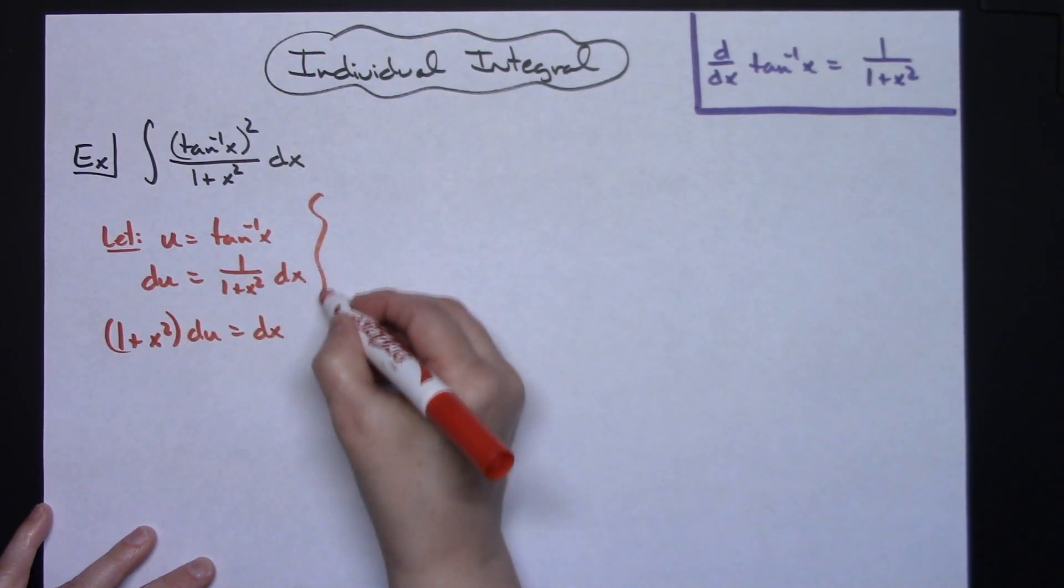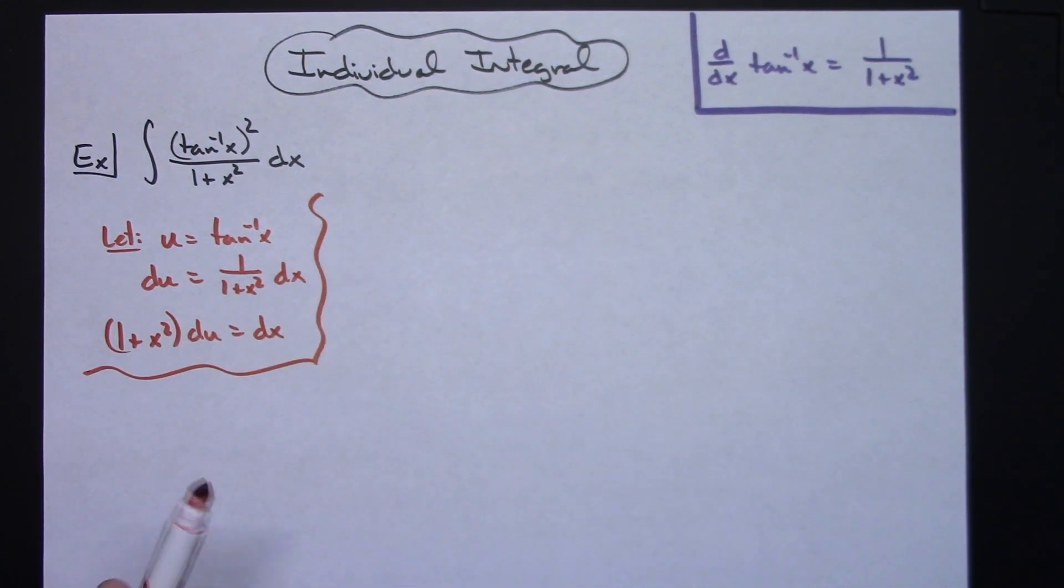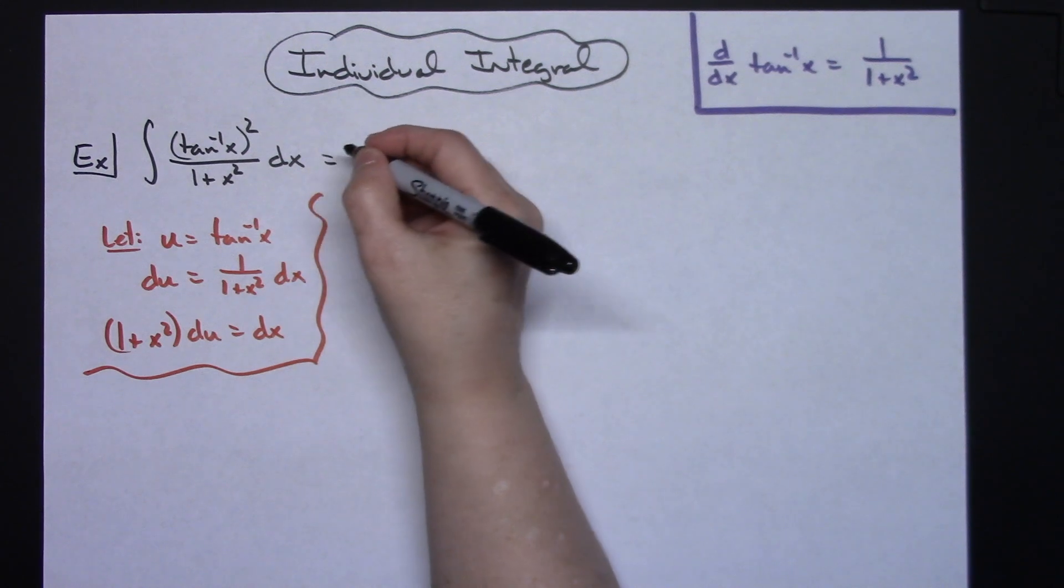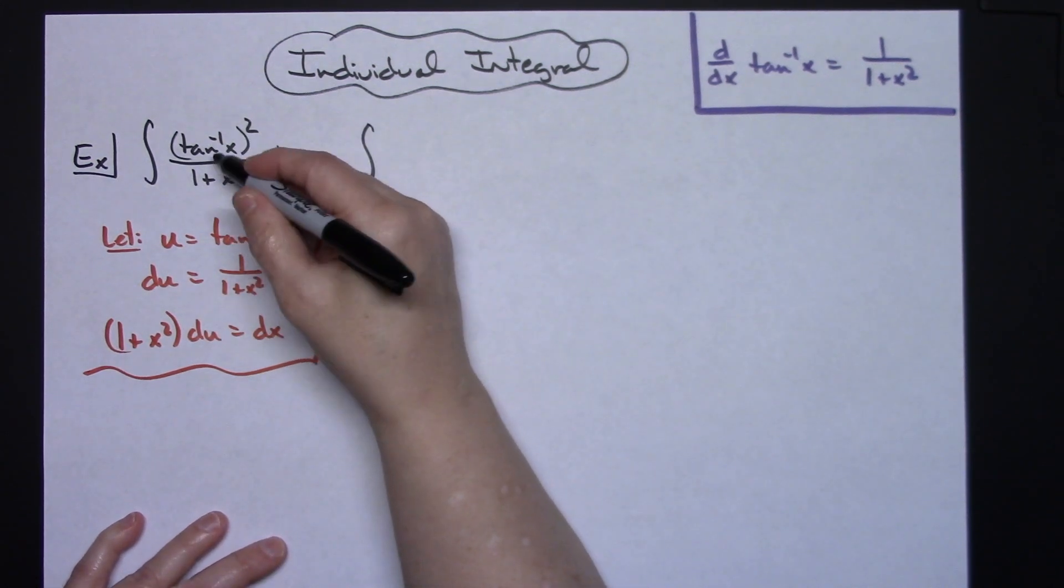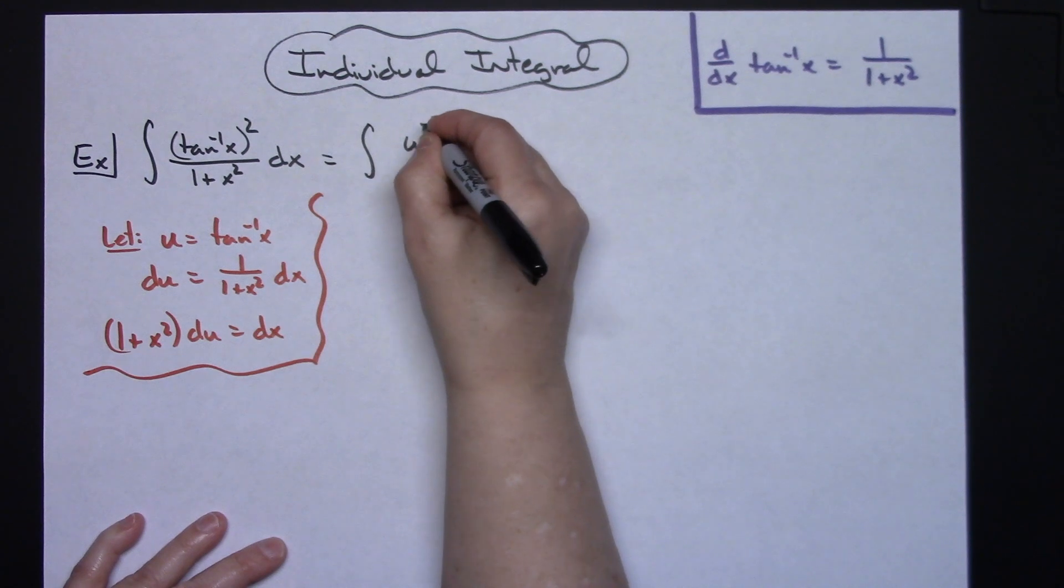At that point, I'm going to come back up to my original integral and make that substitution. In the numerator I'll have u squared, all over 1 plus x squared.